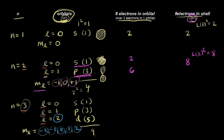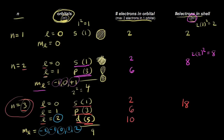For electrons in the third shell: the s orbital holds a maximum of two electrons; the three p orbitals hold three times two equals six; the five d orbitals hold five times two equals ten. So the total is two plus six plus ten equals eighteen electrons in the third shell. Using two n squared: three squared is nine, times two equals eighteen.